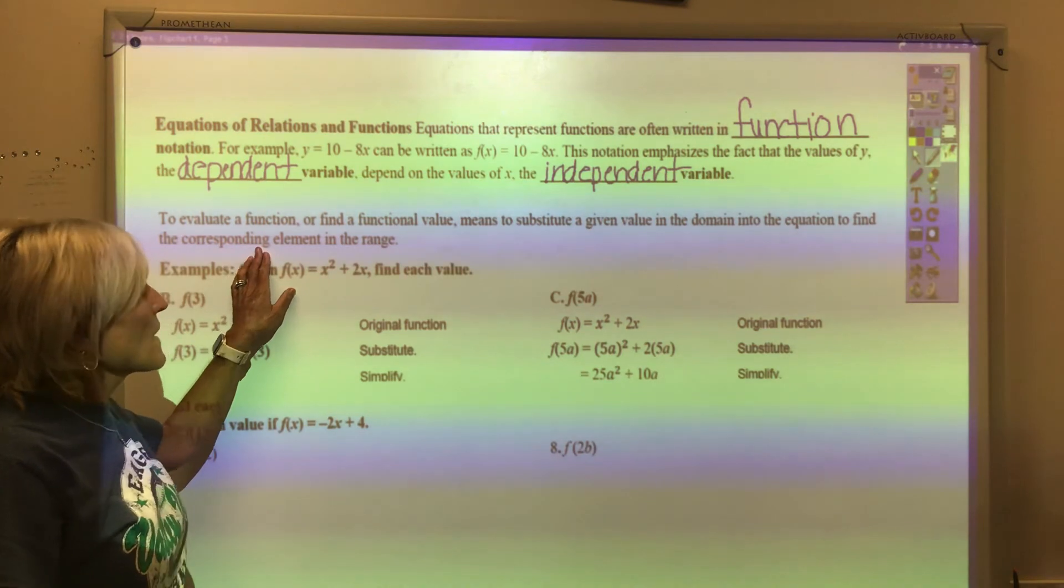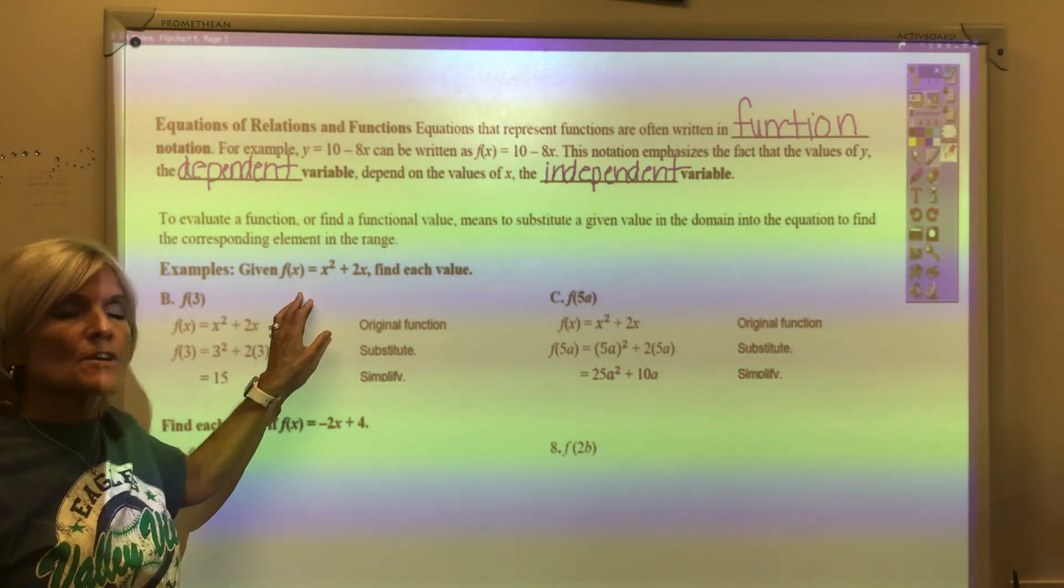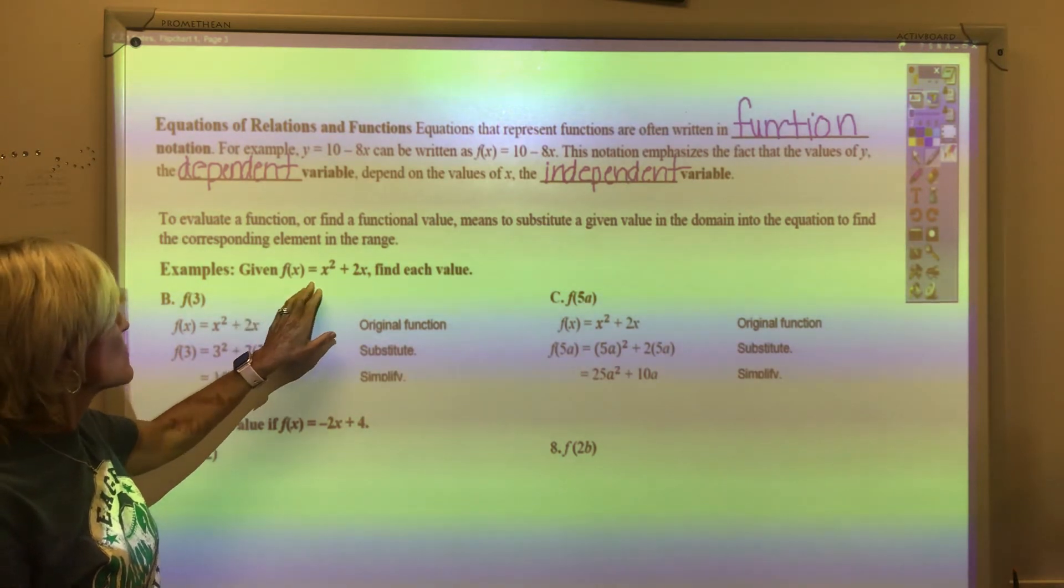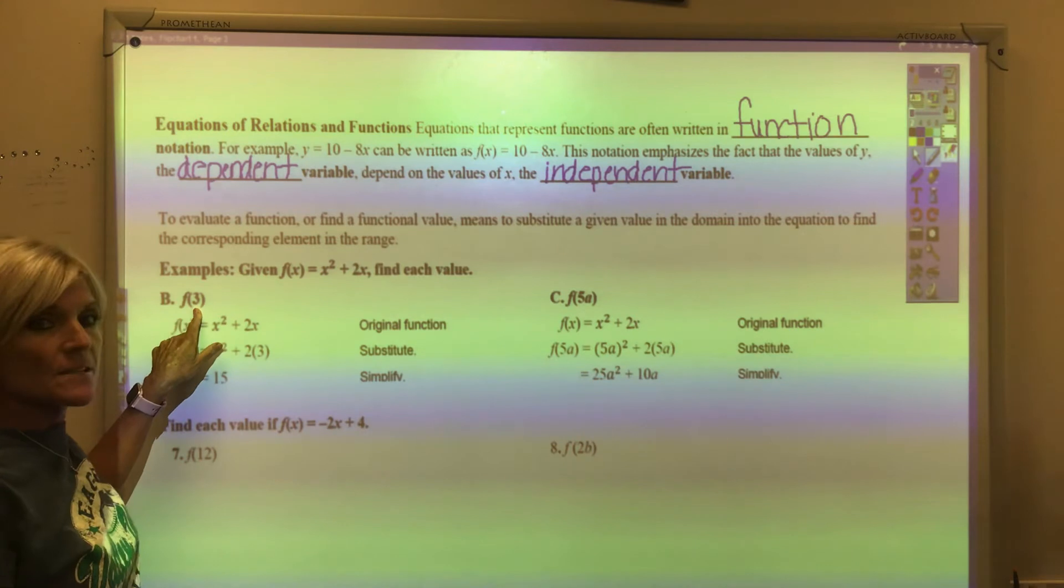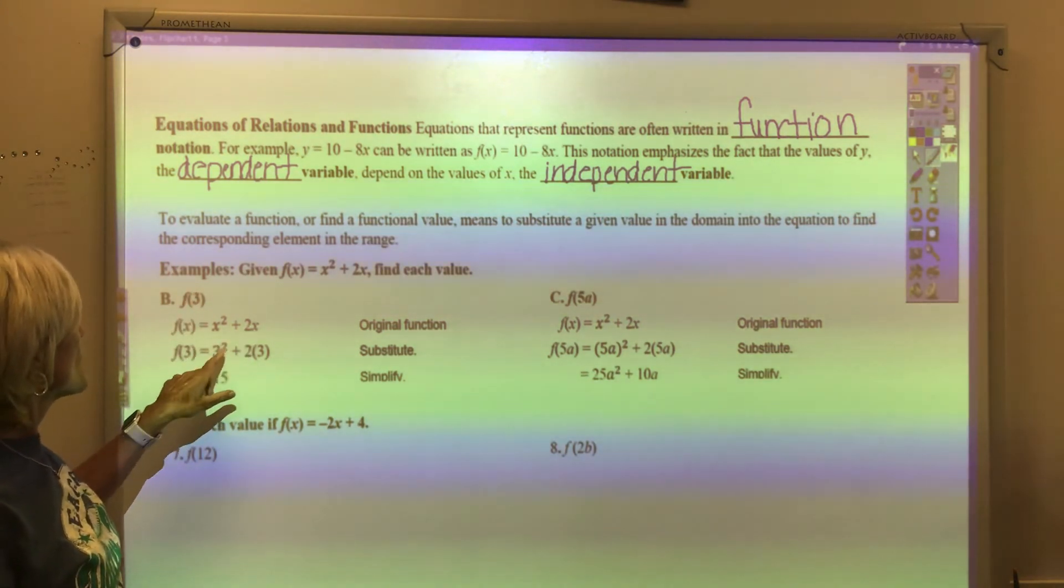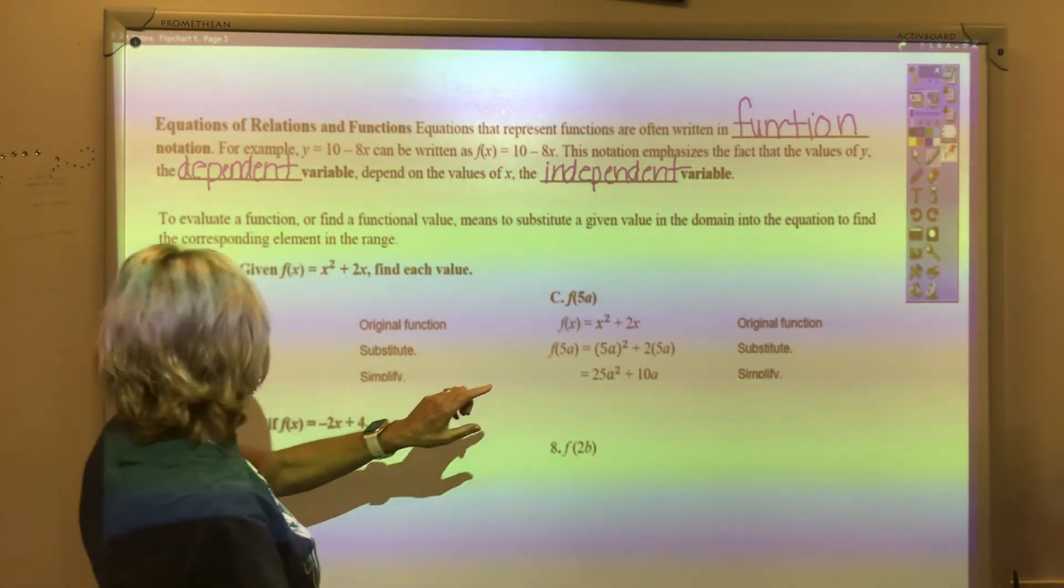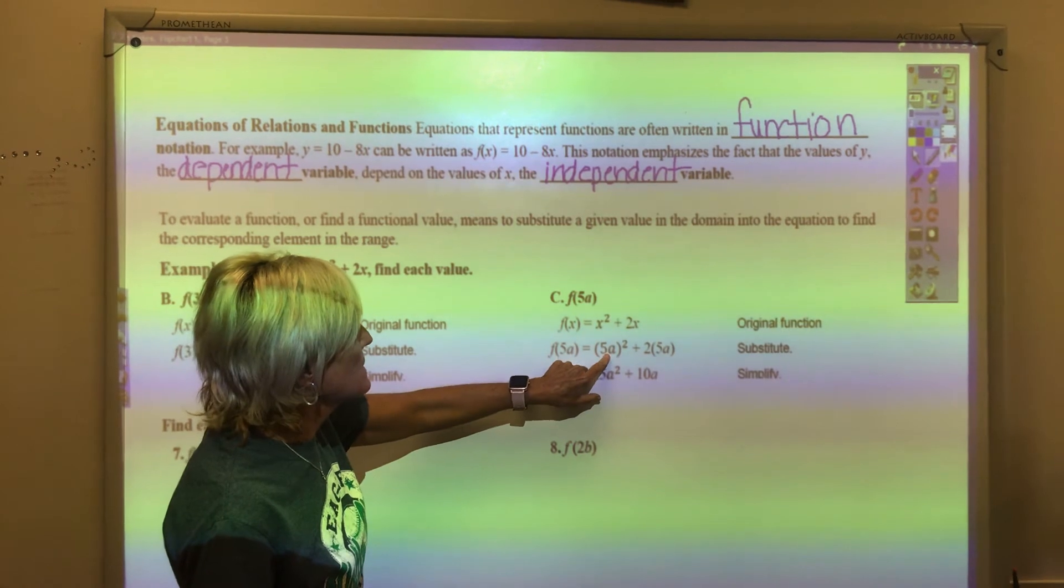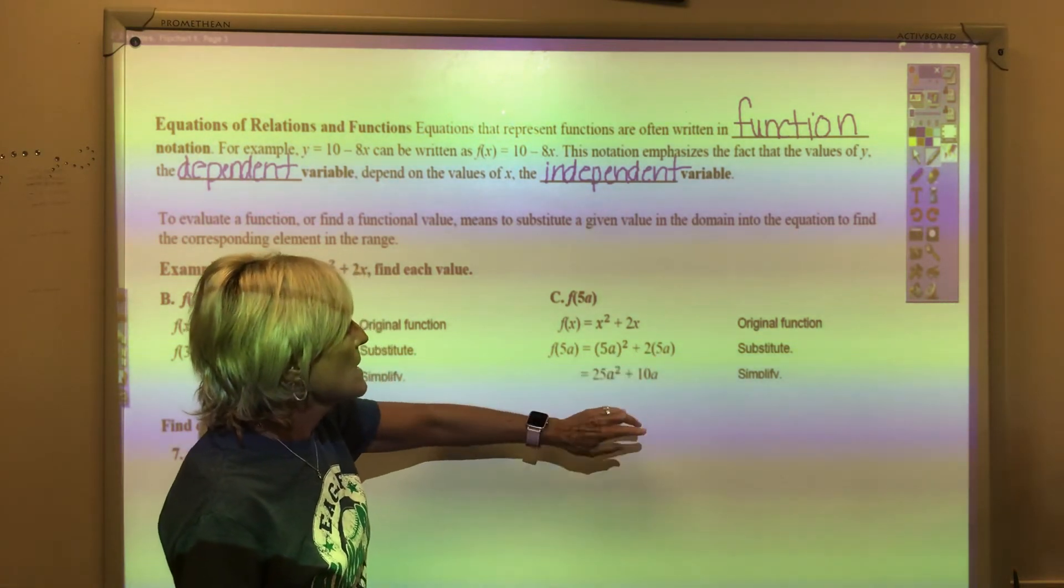To evaluate a function or find a functional value means to substitute a given value in the domain into the equation to find the corresponding element in the range. For example, given the function f(x) equals x squared plus 2x, find each value. We're going to find when x is 3. What this means when you see f of something is you replace the x in the function with that value. So we would replace it and simplify. On c, we're replacing x with 5a. So we're squaring 5a, which gives us 25a squared, and we're multiplying 2 by 5a, which gives us 10a.